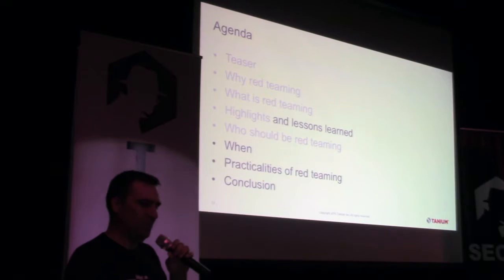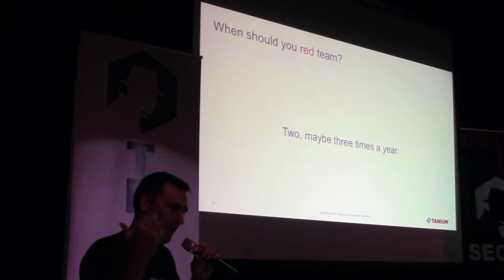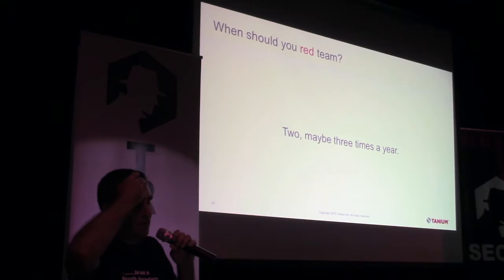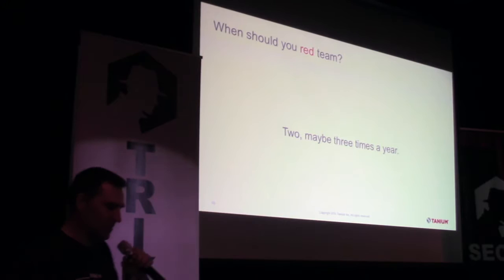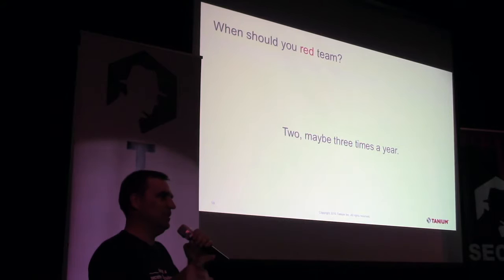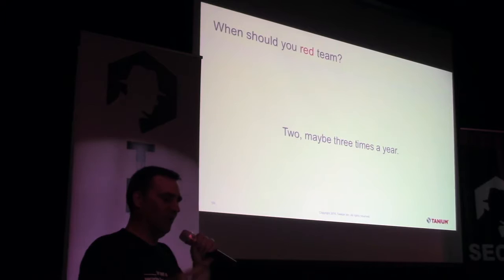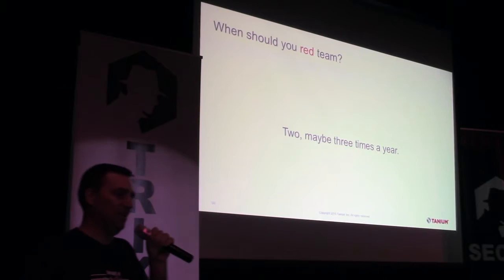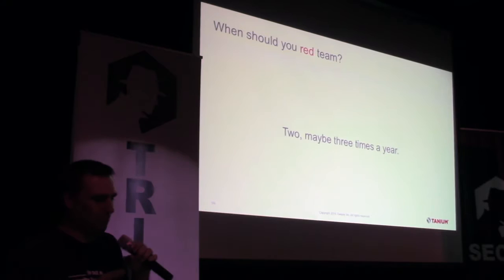When should you be doing red teaming? Two to three times a year is probably sufficient for most organizations. At Microsoft we did this continuously over four years — some engagements went on for months because it was really hard for the red team to get in and they refused to give up, and then blue team work takes about four times as long as red team work. At one point we had four concurrent red team engagements going on with a team of six people on the blue team doing IR against red teamers, four different engagements, and real security incidents affecting customers. Don't pile up your engagements — two to three times a year is plenty.